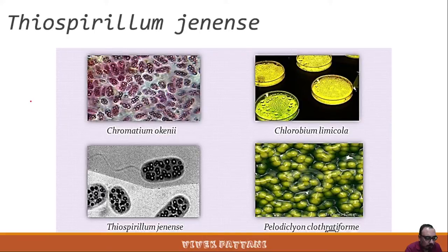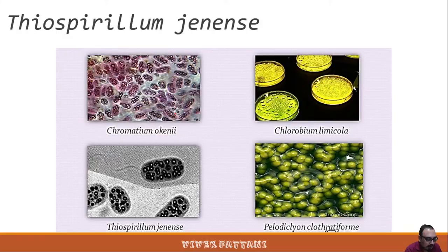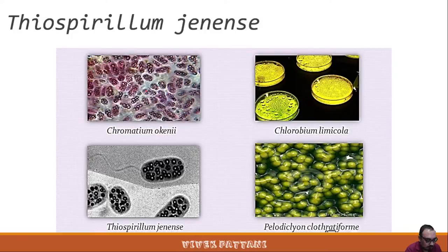Chlorobium belongs to the family Chlorobiaceae, which contains green sulfur bacteria. Normal cells of this family are ovoid, bin-shaped, or rod-shaped and multiply mostly by binary fission. Gas vacuoles occur in some species. The green sulfur bacteria are obligate photolithotrophs using hydrogen sulfide as the electron donor for carbon dioxide fixation. Granules of elemental sulfur are deposited outside the cell, never within the cells, and are finally oxidized to sulfates.